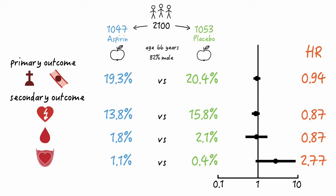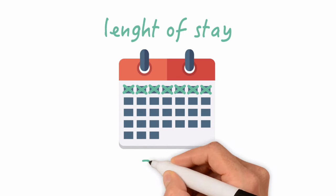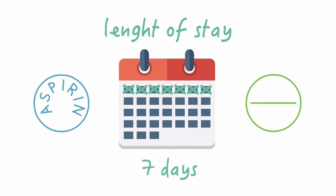Please note that all confidence intervals cross the value of one, which means that none of these hazard ratios is statistically significant. So there's no difference between these groups with respect to these outcomes. Another important outcome, length of stay, was seven days in both groups. So also no difference.